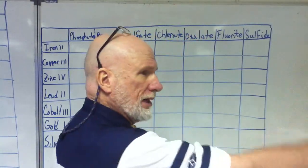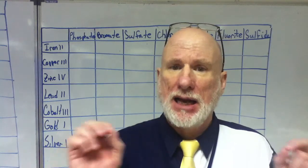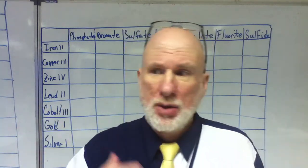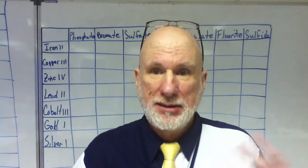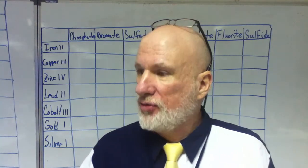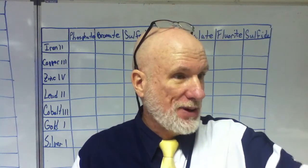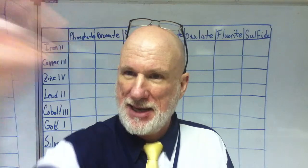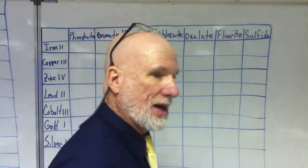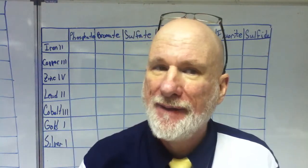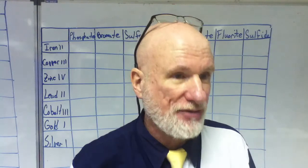The negative component can either be a single ion — whose formula would be found where? A single ion such as sulfide, chloride, bromide, or iodide. Where would you find the formula for a simple, single, elemental ion? The periodic table. Or the negative component can be a polyatomic ion, and where would you find the polyatomic ions? On the polyatomic ion reference sheet.